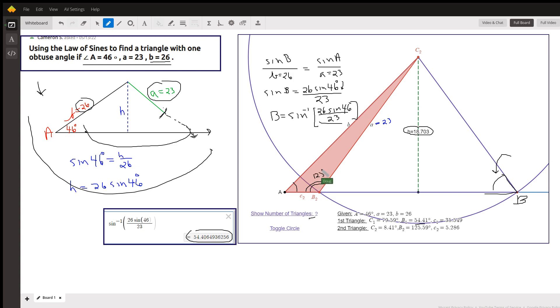We have to find angle C sub 2 by adding together the 46 and the 126, subtracting from 180.